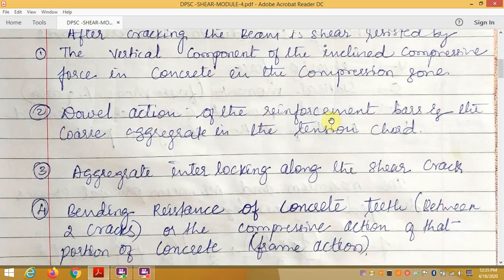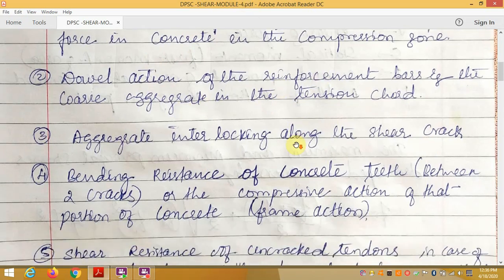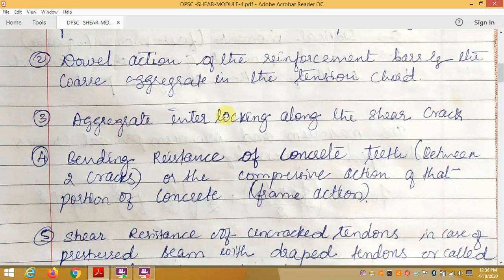Dowel action of the reinforcement is due to the presence of dowel bars and shear reinforcement bars and the core aggregate in the tension zone. Third, aggregate interlocking along the shear cracks. How the aggregates are interlocked in that shear cracks or in that beam or member also depends on that.